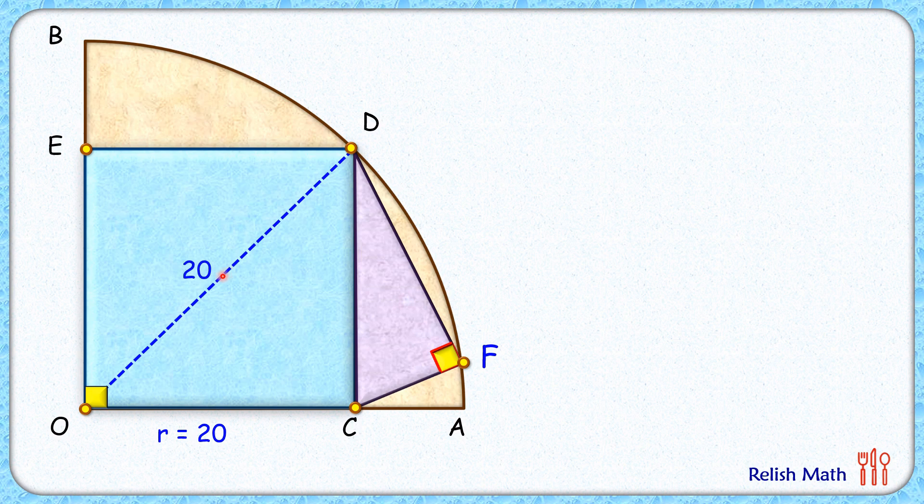So it's 20 centimeters. For this right-angle triangle ODE, we'll apply Pythagoras theorem, and ED will be 10√2, and OE will be 10√2. Now for a tricky solution, we'll rotate this triangle CFD.